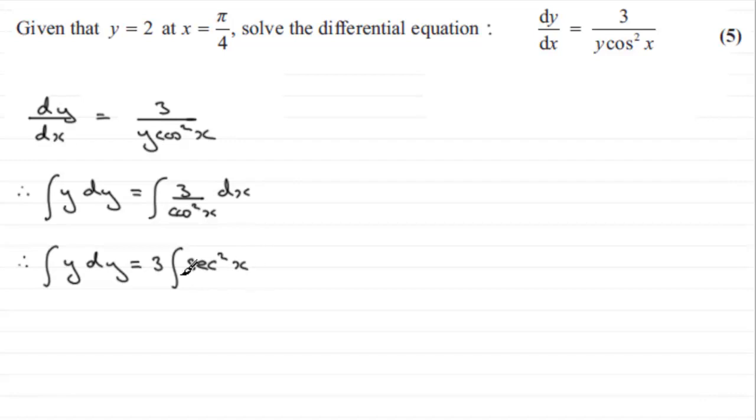I can take the 3 out the front of the integral—it always pays generally to pull a constant out. Now I'm happy with integrating sec squared x; it's one that we should be familiar with. It's what we call a standard integral, and it is tan x. So if we integrate this, y squared over two equals 3 tan x.